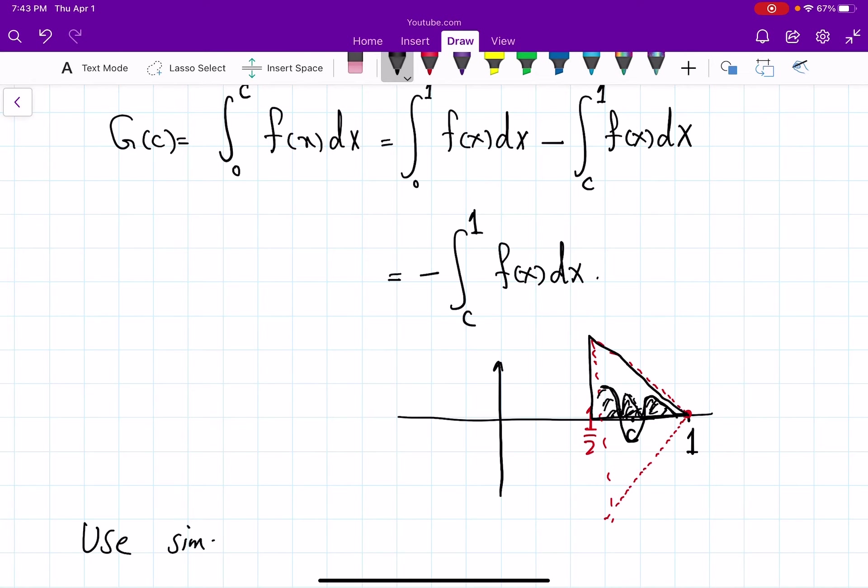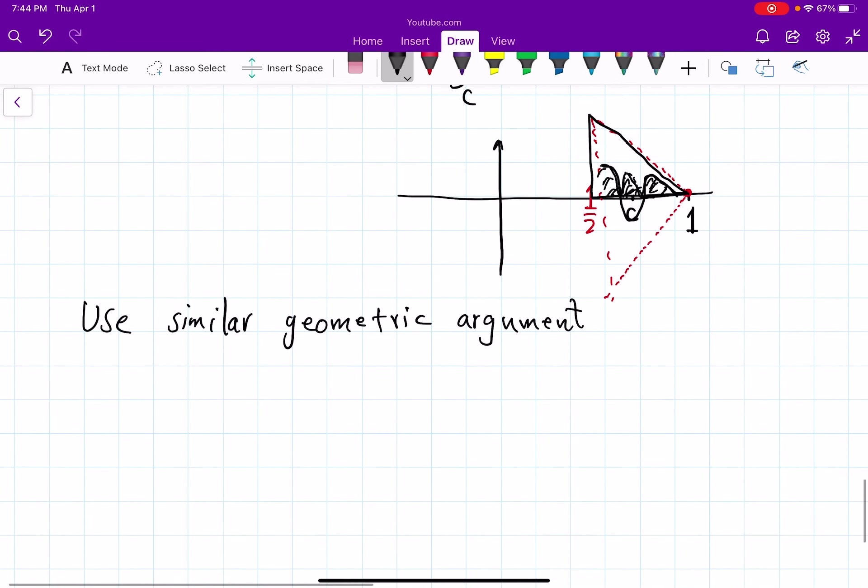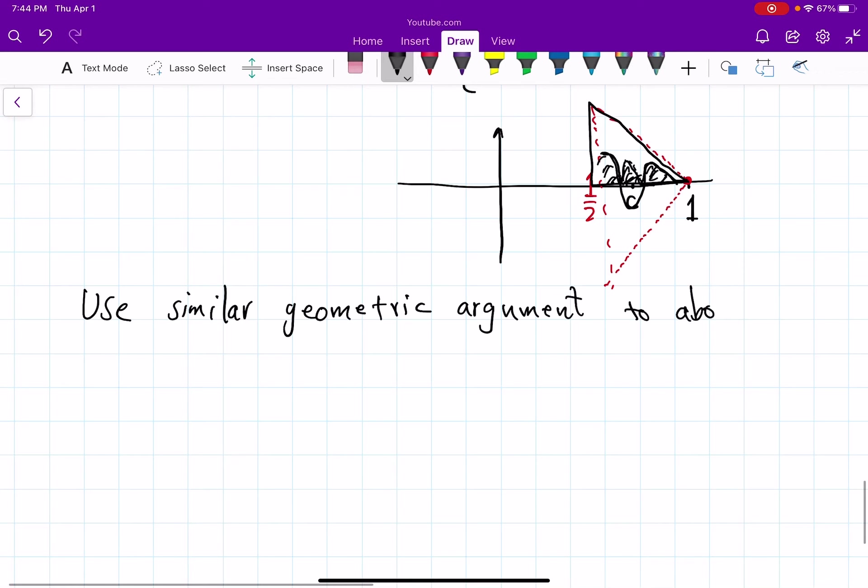And now I know my function when I go backwards is somewhere contained in this, in the union of these two triangles. And absolute value of my function, so if I flip this part like up this way, absolute value of my function is contained also up here. So the area under it is no more than area of this triangle there, which is again one over eight. So in either case, so use similar geometric argument